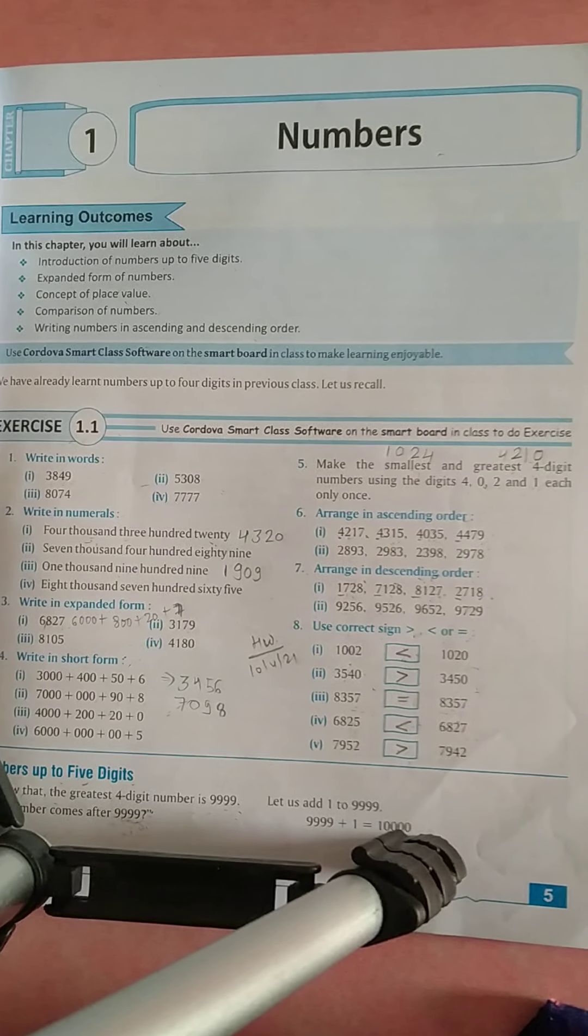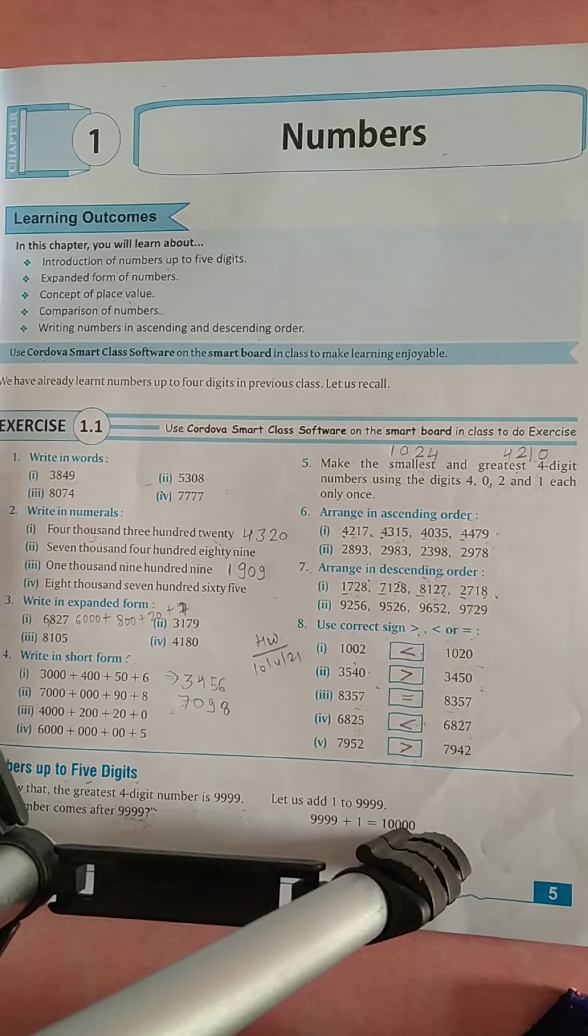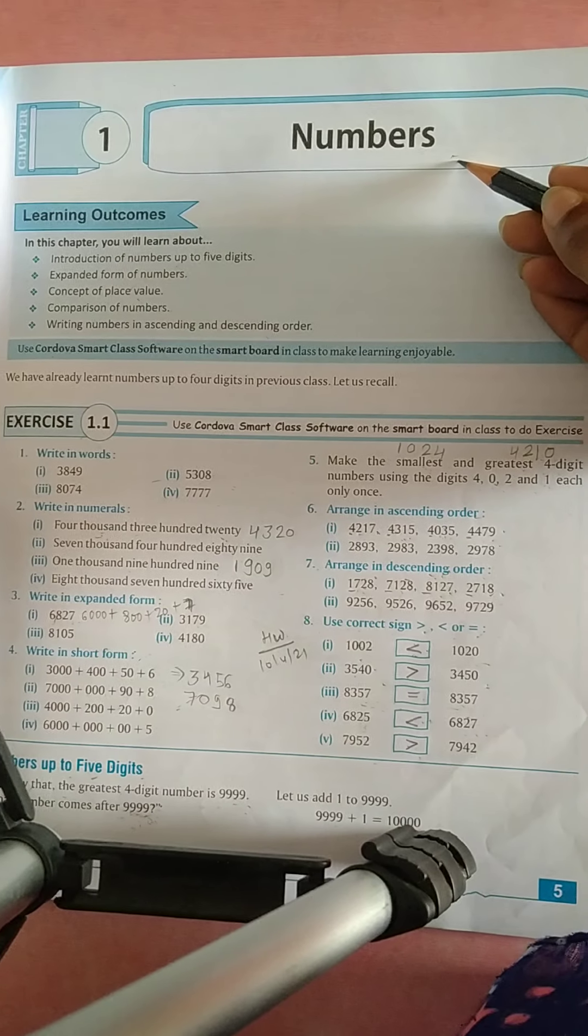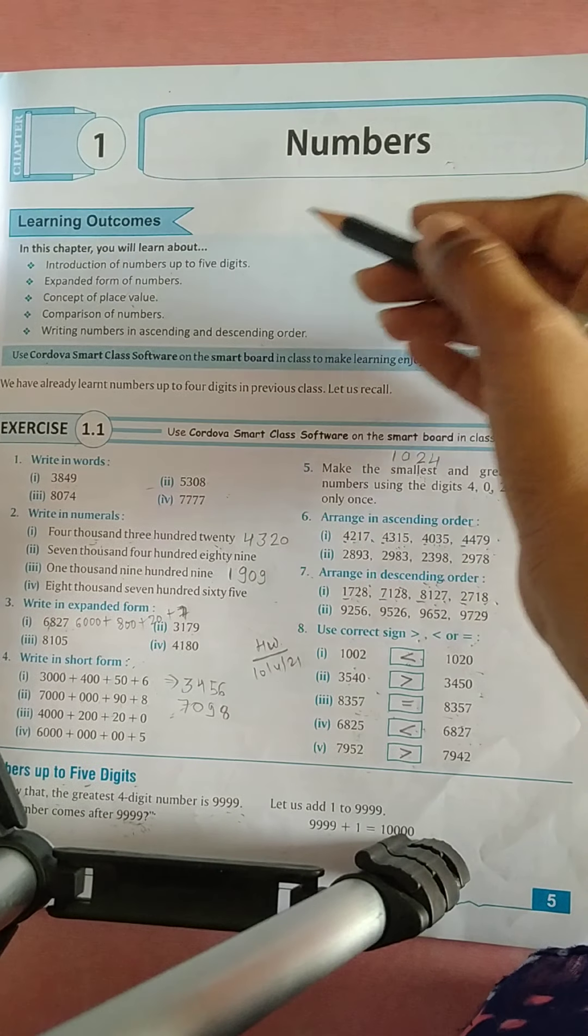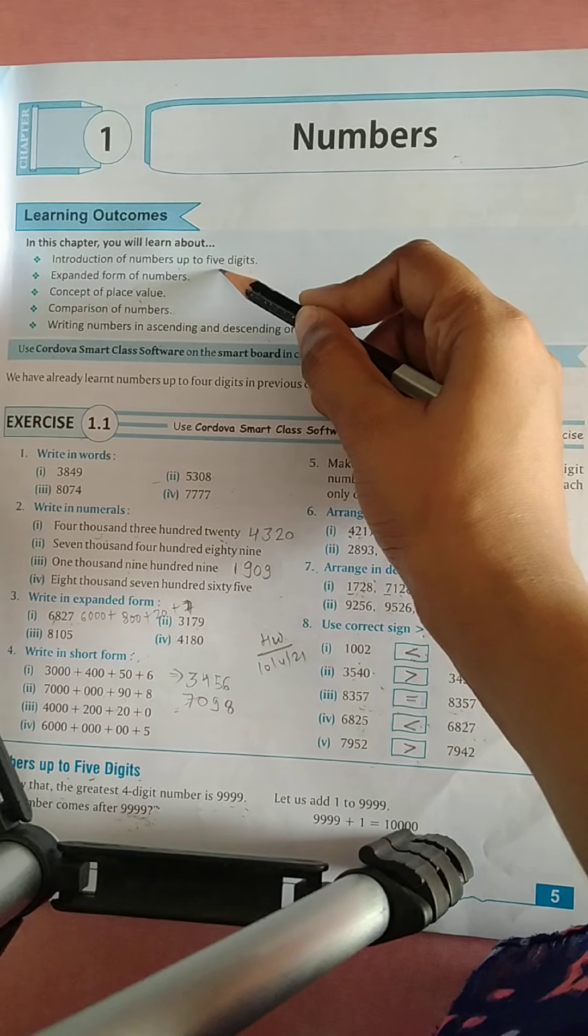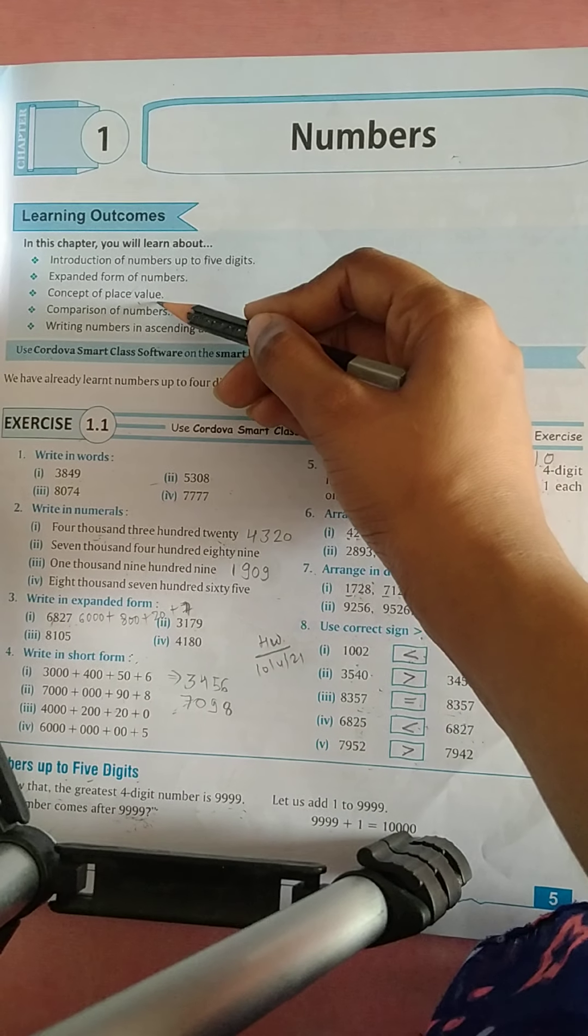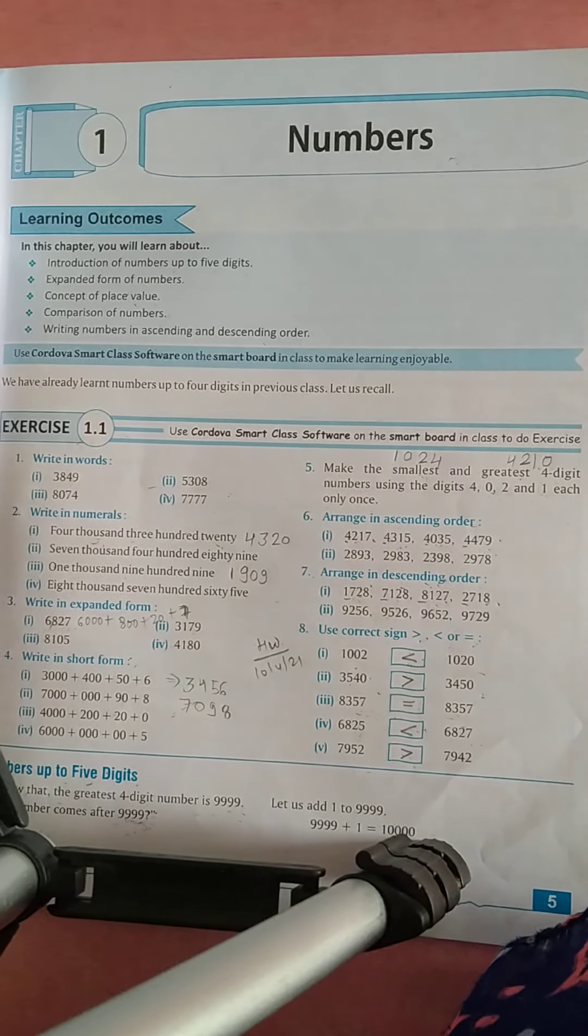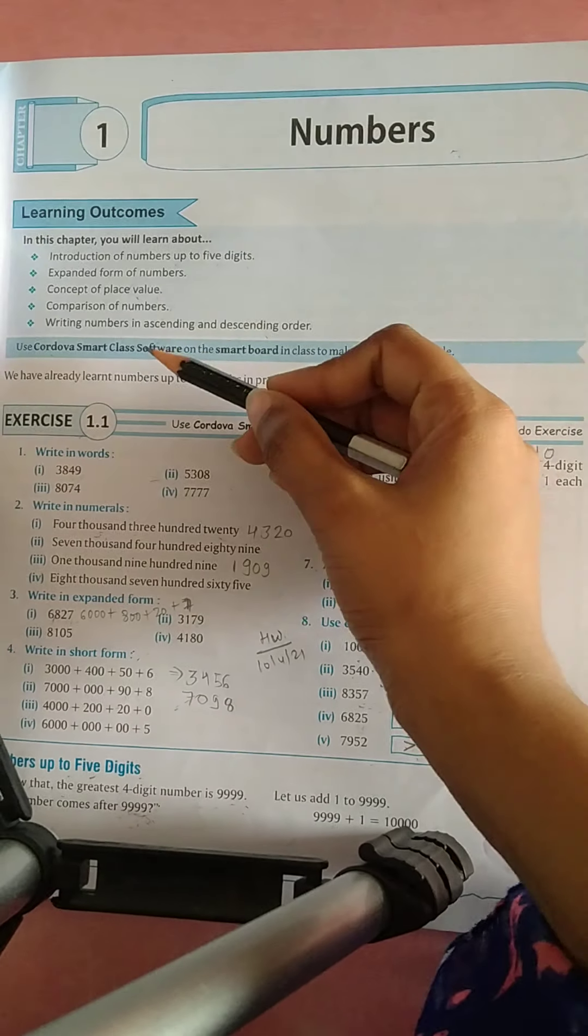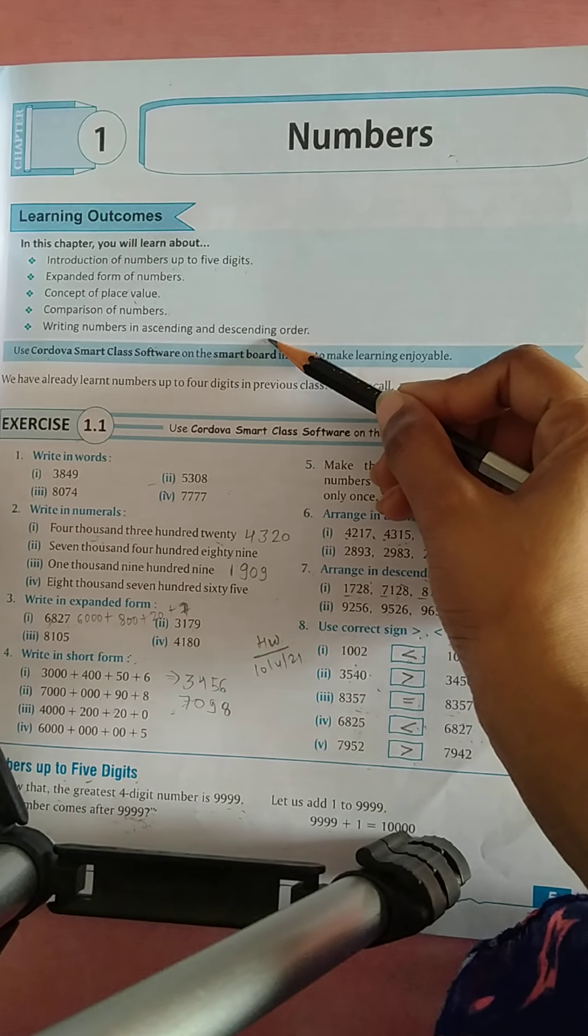Good morning students. Today we will start chapter number 1, Numbers. In this chapter you will study about up to 5 digit numbers, expanded form, place value, then comparison of numbers and ascending and descending order.